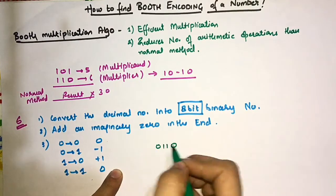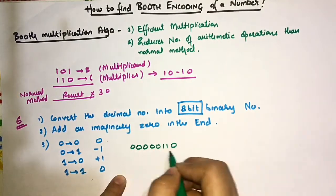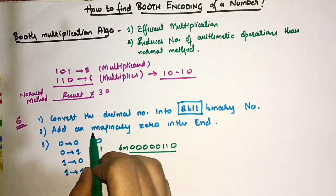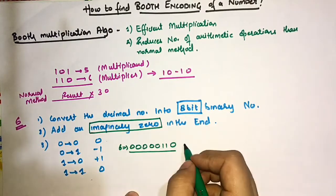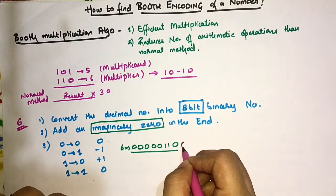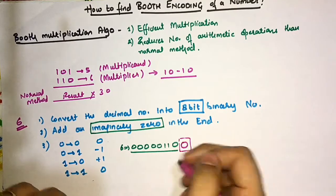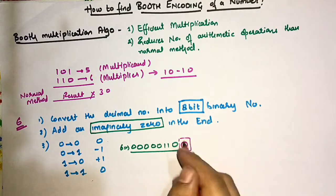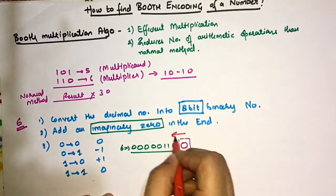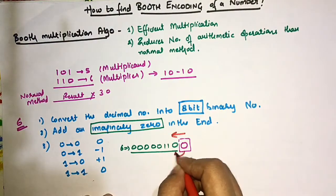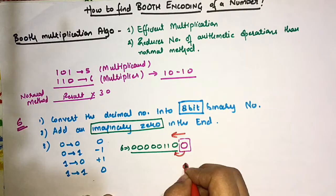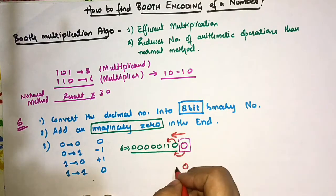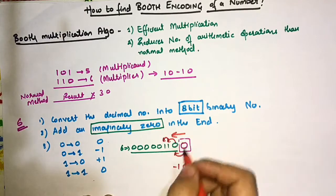For 6, the 8-bit binary number will be 0 0 0 0 0 1 1 0. Now, as I told you, you have to add one imaginary 0 at the end. Then you take pairwise values and traverse from right to left. For 0→0 it is 0, so write 0.